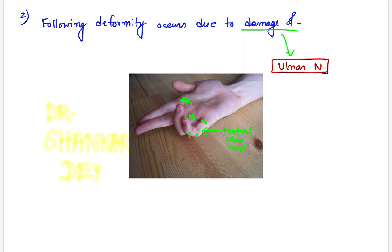Alternatively, for second and third digits, median nerve damage causes second and third digit clawing. And ulnar and median nerve together damage causes total claw hand.